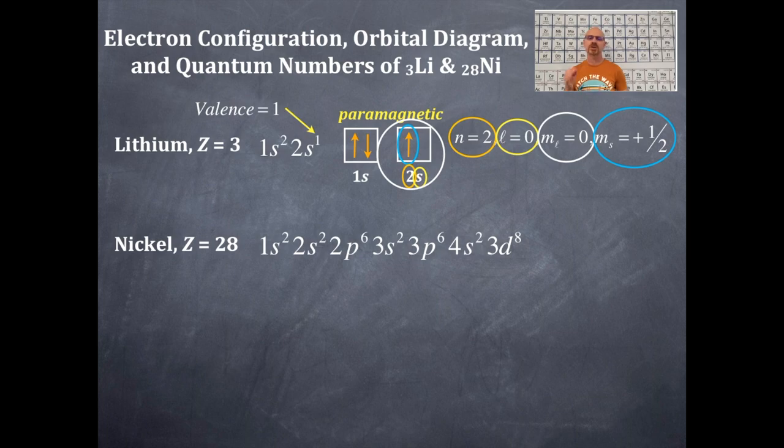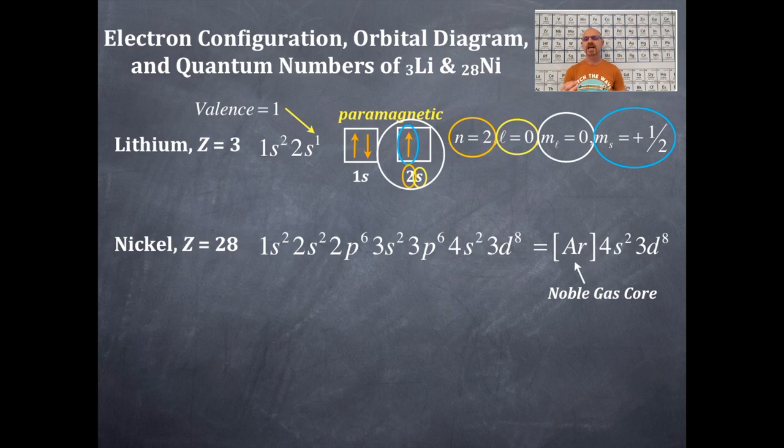And you should have this here for nickel. So 1s2, 2s2, 2p6, 3s2, 3p6, 4s2, and 3d8. Remember, the d's are one less than the period in which they are in. I can also write this with the noble gas in brackets. Those are not parentheses. Those must be brackets. And then thereafter, the noble gas is 4s2, 3d8. That is the noble gas core. And this whole thing is called the noble gas notation.